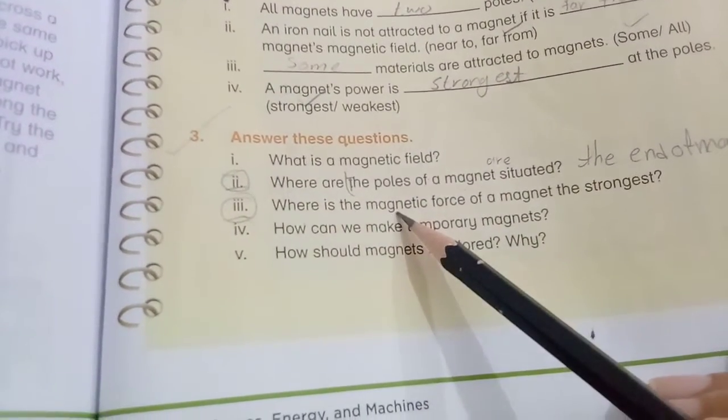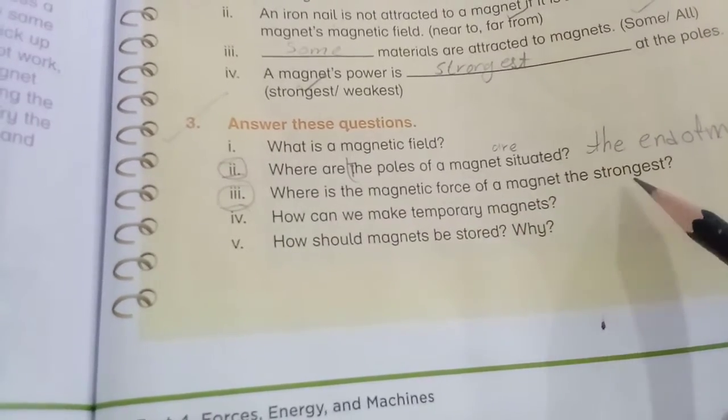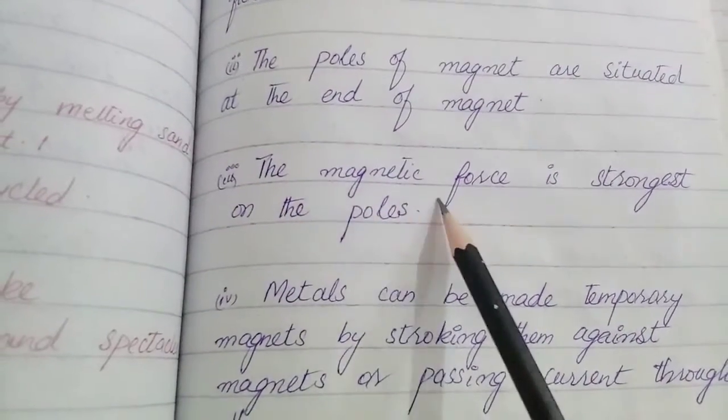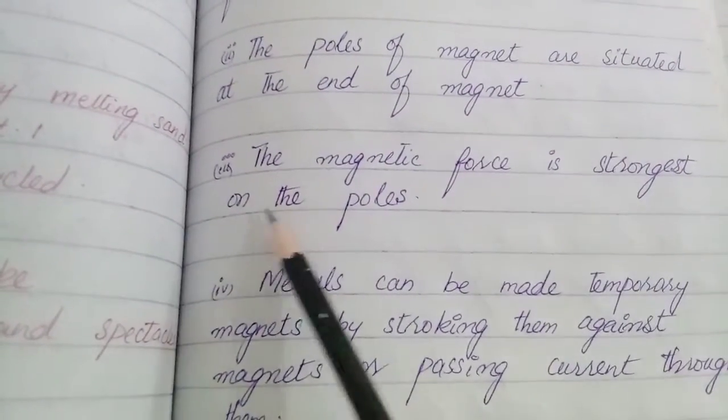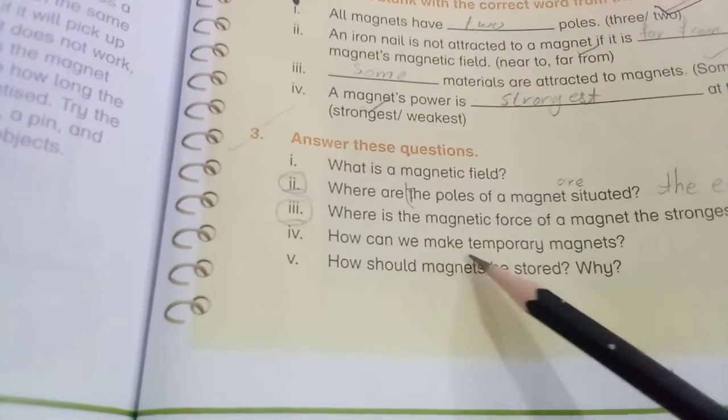Where is the magnetic force of a magnet the strongest? The magnetic force is strongest on the poles.